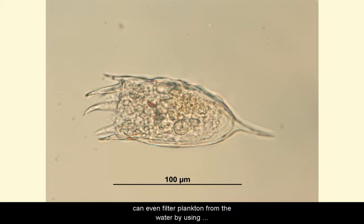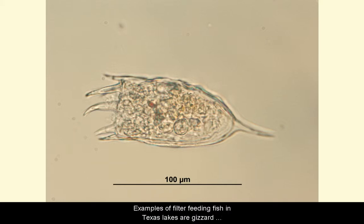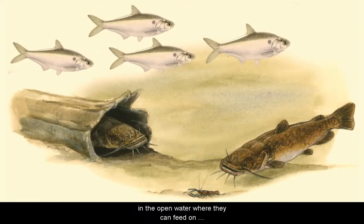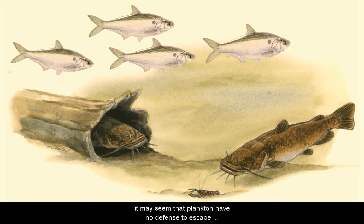Many invertebrates and small fish eat plankton. Some mollusks, such as clams and mussels, and fish can even filter plankton from the water by using specialized mouthparts and adaptations to gills. Organisms that feed this way are called filter feeders. Examples of filter feeding fish in Texas are gizzard shad and paddlefish.